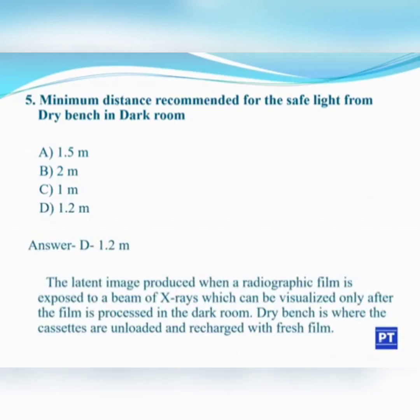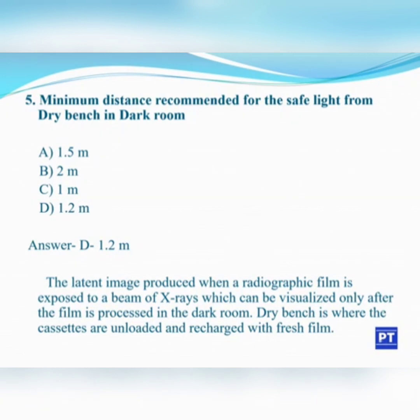The latent image produced when a radiographic film is exposed to a beam of X-rays can be visualized only after the film is processed in the dark room. The dry bench is where cassettes are unloaded and recharged with fresh film. Inside the dark room there is a dry bench, wet bench, and a safe light. The minimum distance of the safe light from the dry bench is 1.2 m.